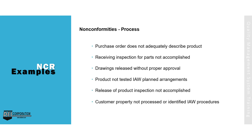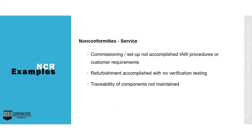For process non-conformances: purchase order does not adequately describe product, receiving inspection for parts not accomplished, drawings released without proper approval, product not tested in accordance with planned arrangements, release of product inspection not accomplished, customer property not processed or identified in accordance with procedures. Non-conformities for service may include commissioning or setup not accomplished in accordance with procedures or customer requirements, refurbishment accomplished with no verification testing, traceability of components not maintained.